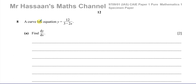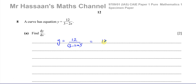Part A: we're given this curve with the equation y equals 12 over 3 minus 2x and we have to find dy/dx. To differentiate this we have to prepare the expression — we write 3 minus 2x in the numerator. So this is the same as 12 times 3 minus 2x to the power of negative 1, and it's now ready to differentiate.